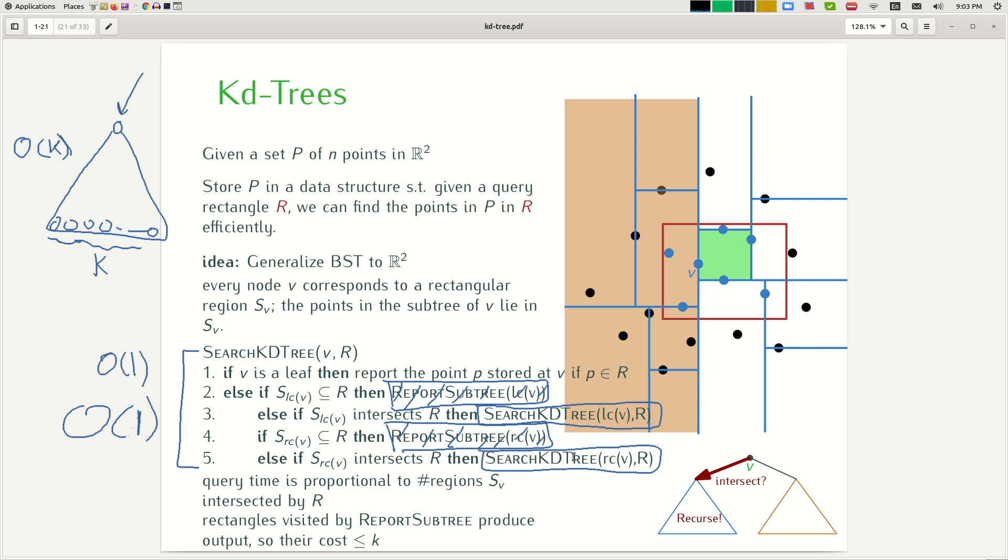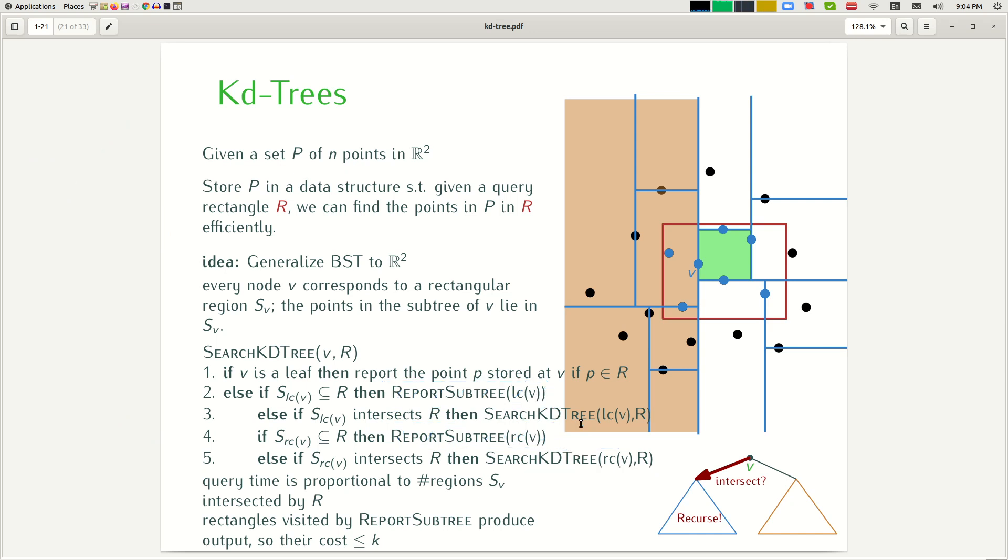What about these two procedure calls? Well, this is just a recursive call on the left child or the right child. Essentially they can be translated to visiting the left child or visiting the right child, which again can be charged to the number of nodes visited in the tree itself. So basically we can see that the query time is proportional to the number of nodes visited, which is equivalent to the number of regions intersected by the query region R, because we only visit a node if we intersect the query region. So that's the only thing that we need to count: how many regions we do intersect.